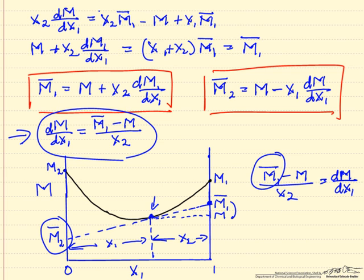We can look at these graphical representations to see how the partial molar quantity changes. As we approach pure component one, the partial molar quantity gets close to the molar quantity of the pure component, as expected. But for a component that's very dilute, the partial molar quantity can be quite different. For binary solutions, we can quickly see from the graph how the partial molar quantity changes as we change the mole fraction.